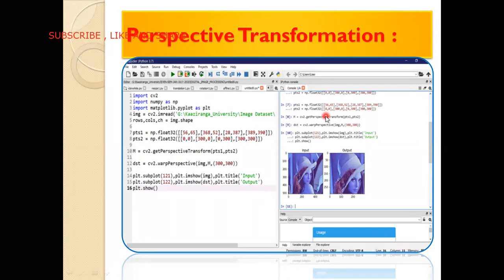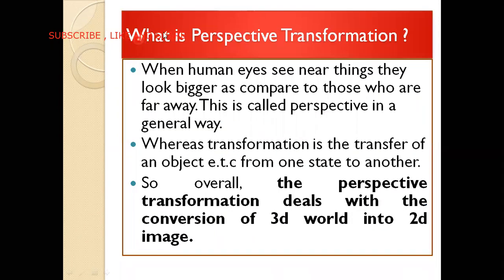So let's start today's class. First of all, what is perspective transformation? When human eyes see near things, they look bigger as compared to those that are far away. This is known as perspective — nearby things look bigger, and things far away look smaller. This is perspective. Transformation means the transfer of an object from one state to another.